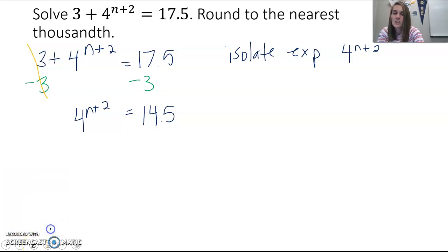Now my exponential term is isolated. So what do I need to do next? I need to get the variable out of the exponent. 4 is our base. We could rewrite 4 as 2 squared, but 14.5 we're not going to be able to rewrite easily as a power of any kind.